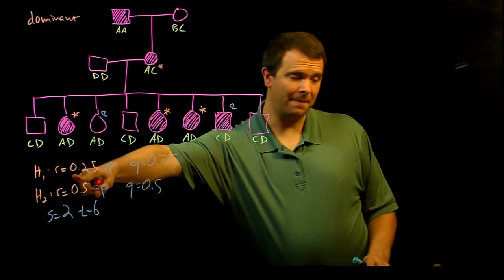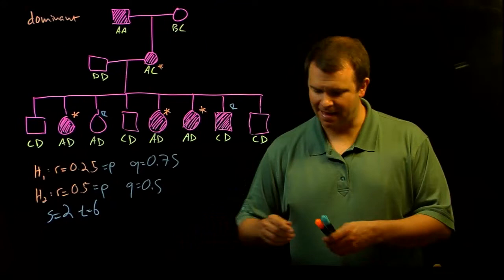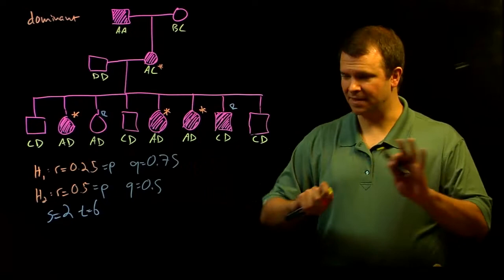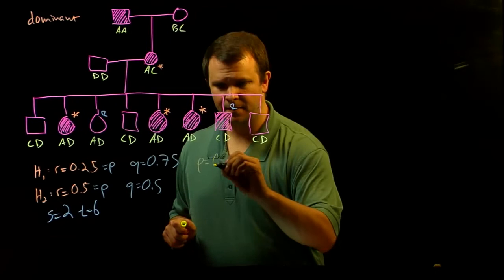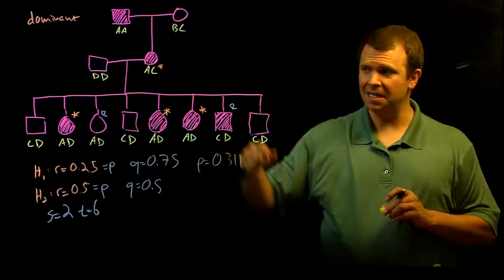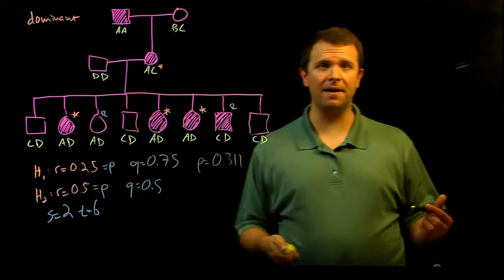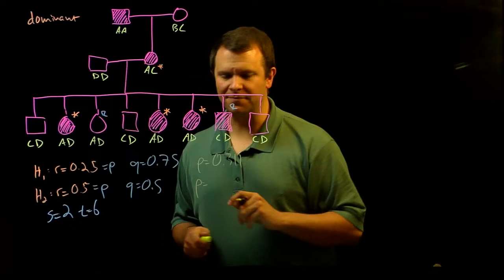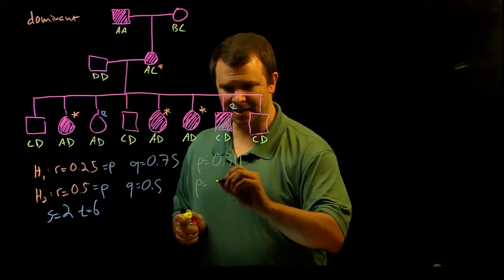And so given this hypothetical recombination frequency, I'll go ahead and elide the math again. But if you plug these into the binomial distribution, you end up with a probability of 0.311 that we saw this data given this hypothesis or under this hypothesis. And under hypothesis two, the probability that we would see this data, that we would see this frequency of recombinants and non-recombinants is 0.109.